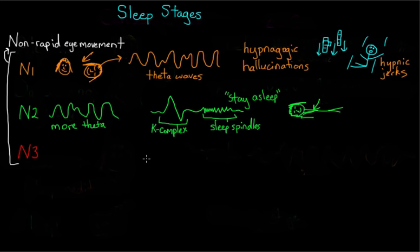So beyond N2, we have N3, so this is our last non-REM stage, and N3 is also called slow-wave sleep because, as you might guess, brainwaves are very slow. And these are called delta waves, and they have a range of about 0.5 to 2 hertz. So you get basically a half to 2 oscillations of these brainwaves per second.